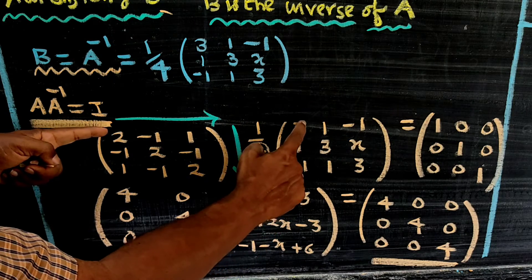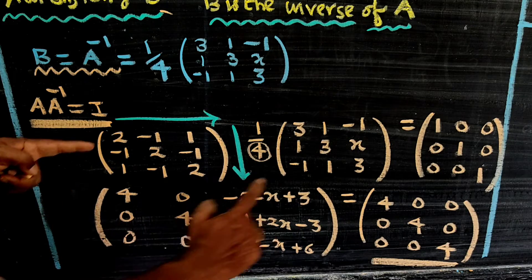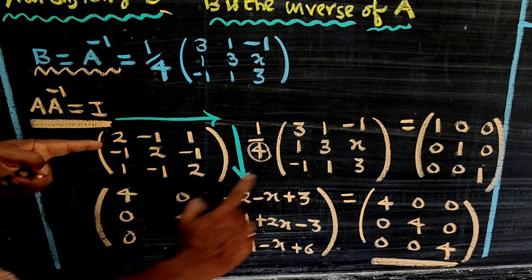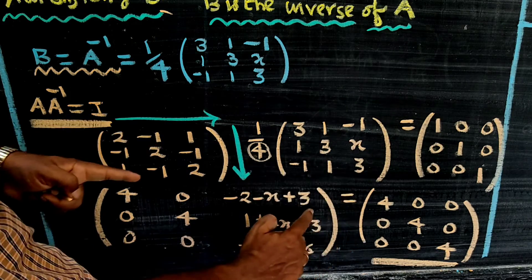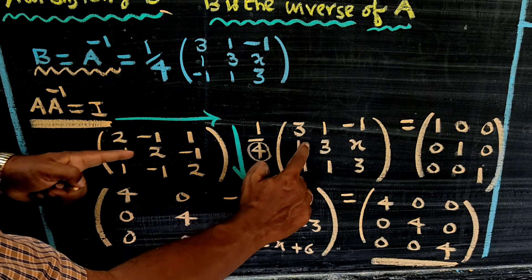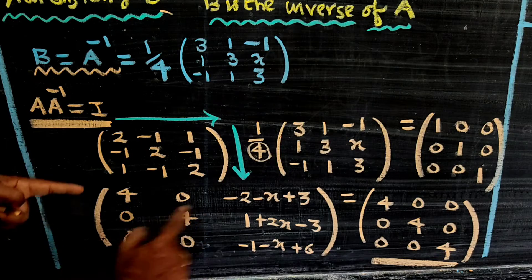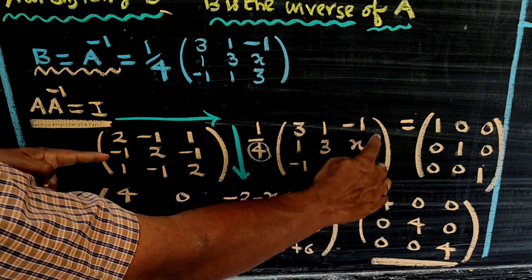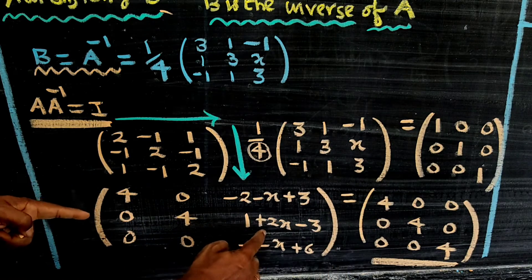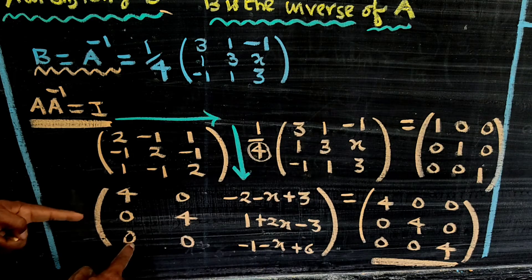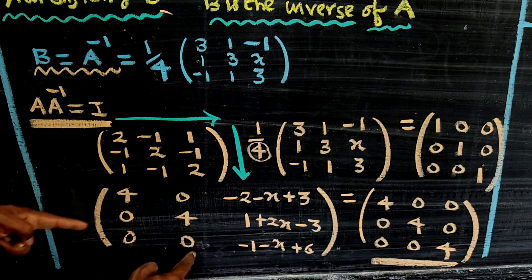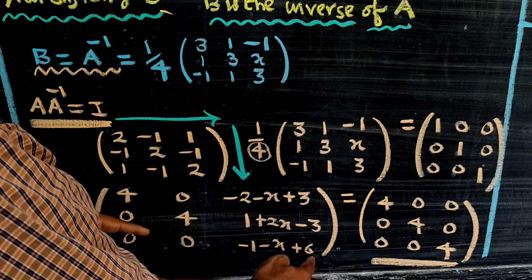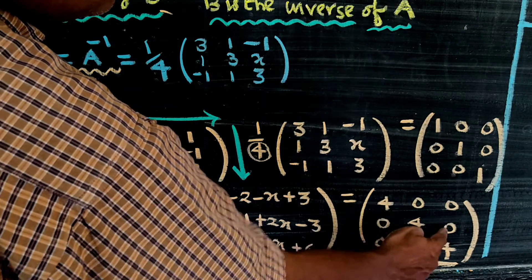Computing the entries: 6 - 1 - 1 = 4. Then 2 - 3 + 1 = 0. Minus 2 - 6 + 3, then minus 3, and 2 + 1 = 0. Minus 1, and 6 - 1 = 4. Then 1 + 2x - 3, that is 3 - 1 - 2 = 0. And 1 - 3 + 2 = 0. Minus 1 - x + 6 equals 4, giving the identity matrix scaled by 4.